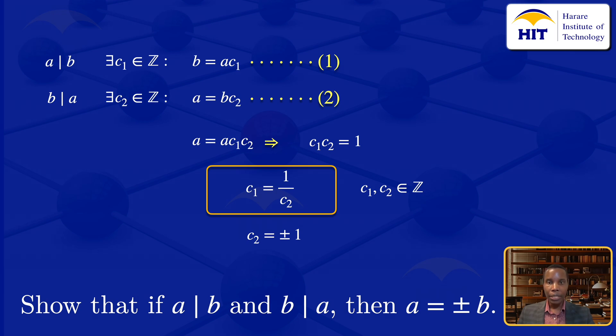In equation 2, A = BC₂, and we found C₂ = ±1. Substituting C₂ into equation 2, we get A = ±B, which is what we were required to show. Therefore, if A divides B and B divides A, then A = ±B. That's our solution.